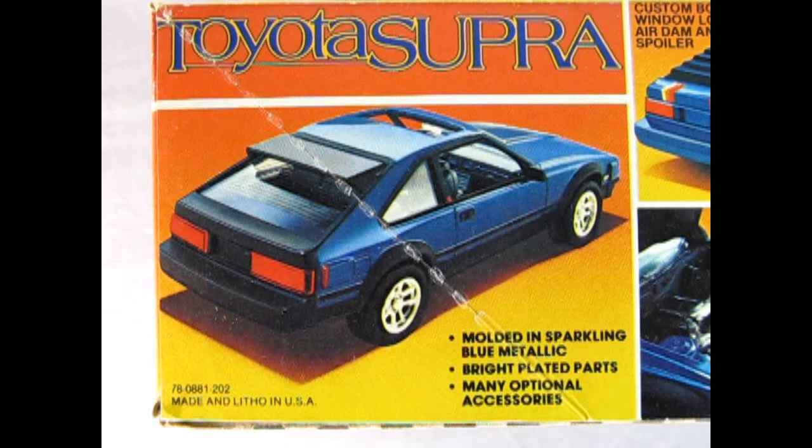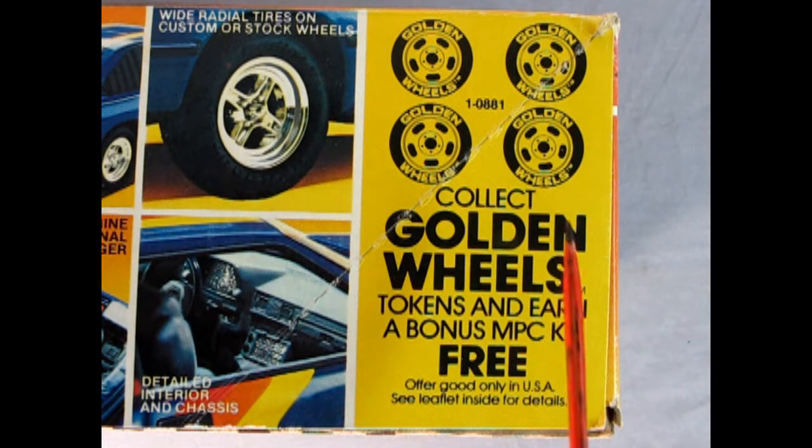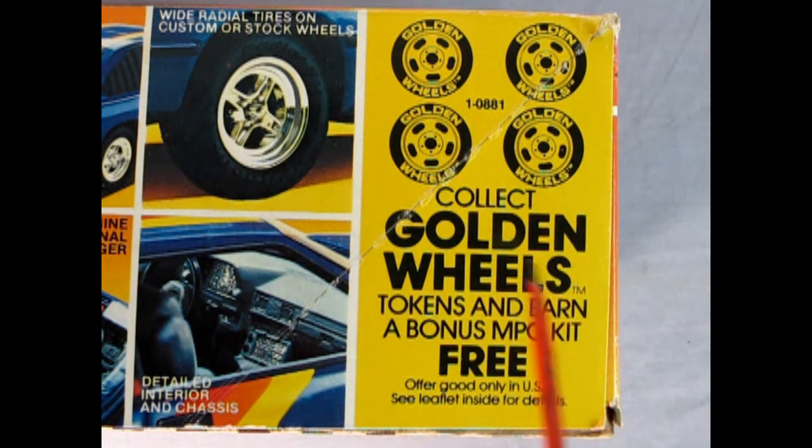On this side of the box, we can see the amazing features. This model is molded in sparkling blue metallic, has bright plated parts, and many optional accessories. We get custom body panels, window louvers, air dam and spoiler, overhead cam engine with optional turbocharger, wide radial tires on custom or stock wheels, and a detailed interior and chassis. With this model kit we also had the golden wheels. You collected the golden wheels, cut them out, sent the tokens over to MPC, and you received a bonus MPC model kit absolutely free.